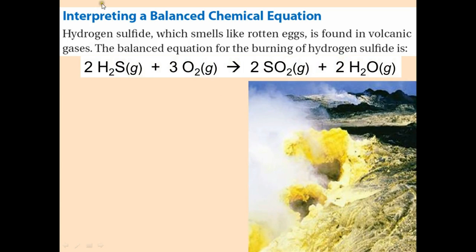Now we have another equation. Hydrogen sulfide, which smells like rotten eggs, is found in volcanic gases. The balanced equation for the burning of hydrogen sulfide is: 2H2S + 3O2 → 2SO2 + 2H2O. We're going to figure out the number of atoms, molecules, moles, and mass for this equation.